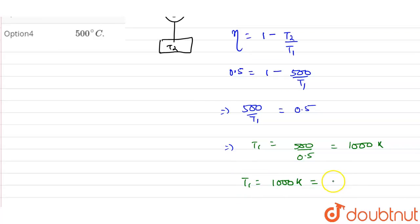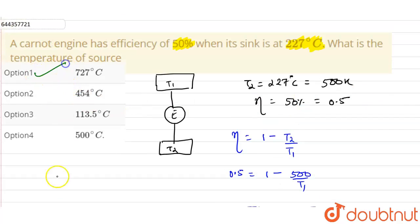so this can be written in degree Celsius as 727 degree Celsius. So from options, option one is correct.